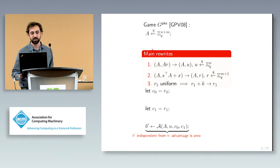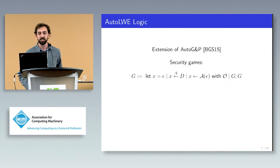This observation suggests a way for us to encode security proofs. We present a logic, AutoLWE, for reasoning about lattice-based cryptosystems. This logic is based off of an earlier one, AutoGNP, which was designed for group and pairing-based schemes. The main feature of AutoLWE and AutoGNP is how they perform these security game rewrites, as mentioned before. Security games and hybrids are encoded using a simple probabilistic programming language, which has things like let bindings, sampling of distributions, sequencing, and most importantly, adversary calls in which the adversary has access to some given oracle, such as a decryption or a key generation oracle.